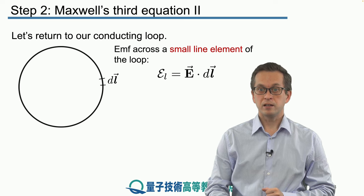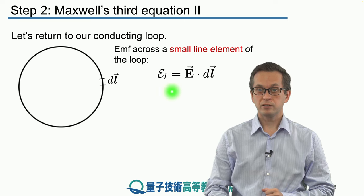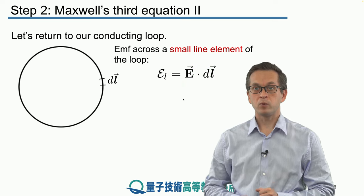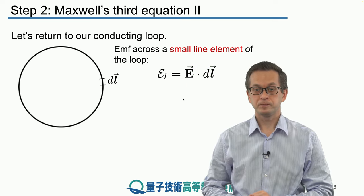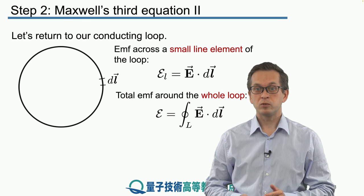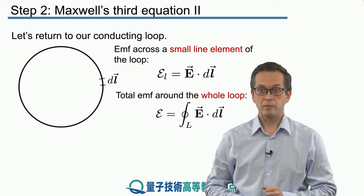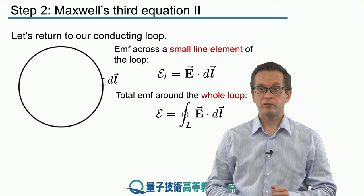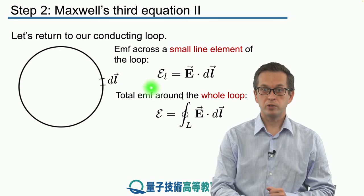Well, we can say that it's the electric field dot product with the segment of the loop dl. And now we want to know what is the total EMF across the whole loop. So all we have to do is we have to add up all this tiny little contribution, these ELs, around the whole loop.